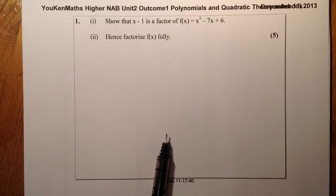This is the Higher NAB, Unit 2, Outcome 1. It's on polynomials and quadratic theory. We have two questions to answer within this outcome, and it's worth eight marks.